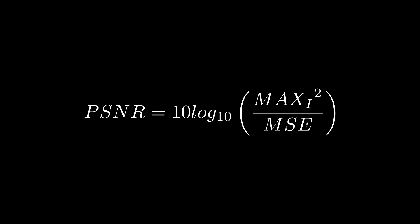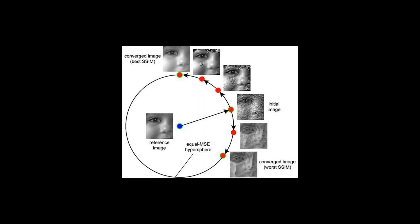One major issue with both mean squared error and peak signal-to-noise ratio is that they do not take the structural components of an image into account, which are extremely important for creating reconstructions that appeal to the human eye. This is apparent in the following figure, where each of the surrounding images has the same mean squared error from the target, but clearly some are much better than others in terms of their structural appearance.